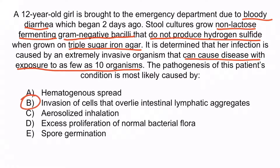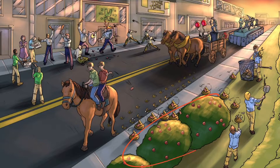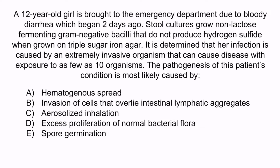The correct answer is B — invasion of cells that overlie intestinal lymphatic aggregates. Rather than saying M-cells outright, this answer choice describes them: M-cells overlie Peyer's patches, which are intestinal lymphatic aggregates, and it's here that Shigella gains entry into host cells, where it can cause cell death and spread to adjacent cells. A is incorrect because Shigella spreads cell to cell, not hematogenously. C is incorrect because Shigella enters through the GI tract, not by inhalation. D is incorrect because Shigella is never part of normal flora.